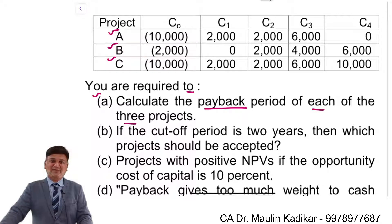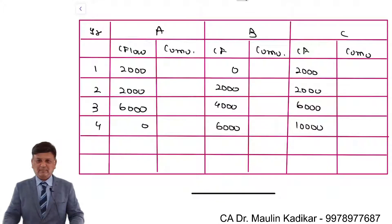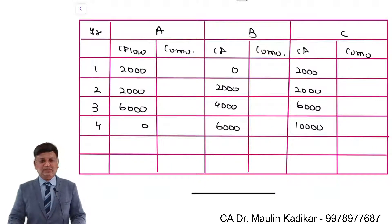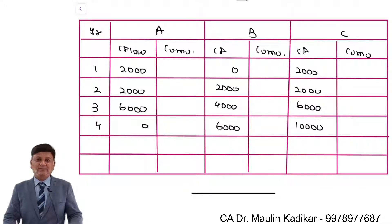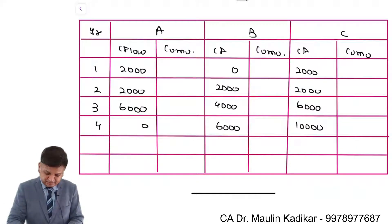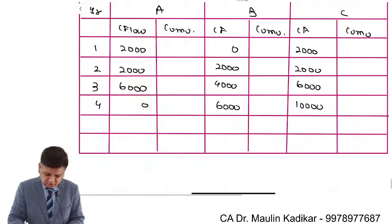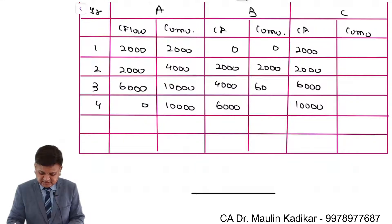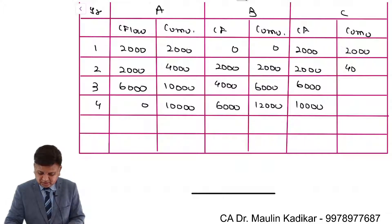In order to compute the payback period, we will compute the cumulative cash flow. For Project A, the cumulative cash flows are 2,000; 4,000; 10,000; and 10,000. For Project B, it is 0, 2,000, 6,000, and 12,000. For Project C, it is 2,000; 4,000; 10,000; and 20,000.